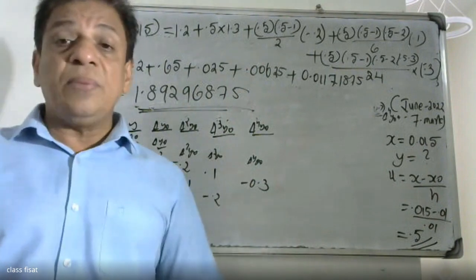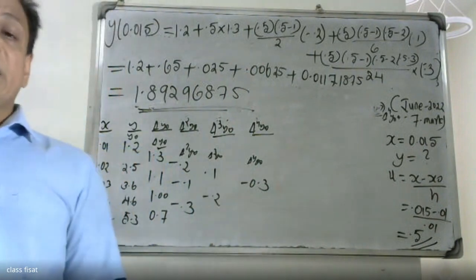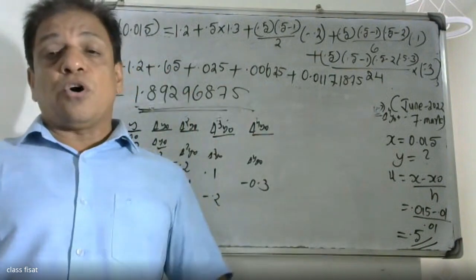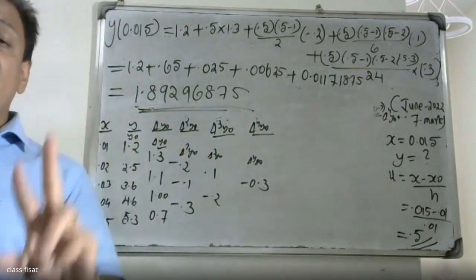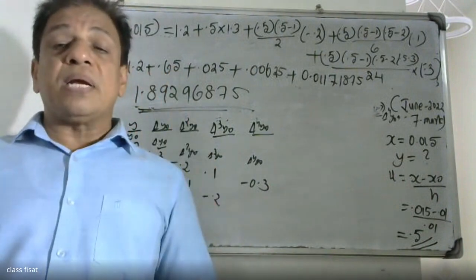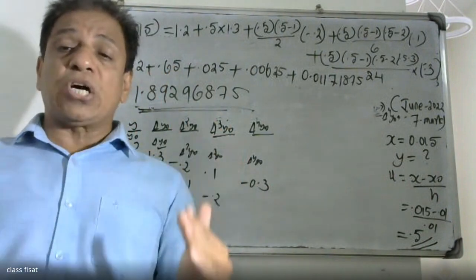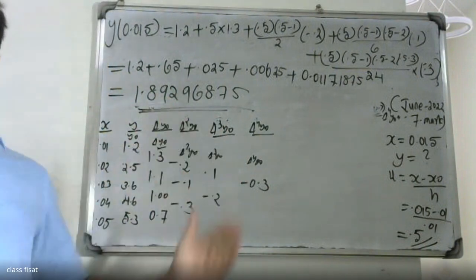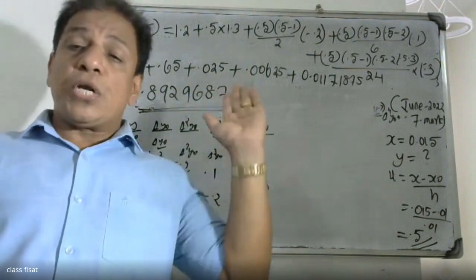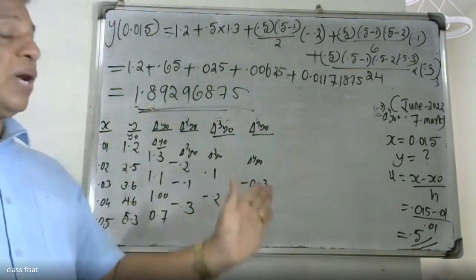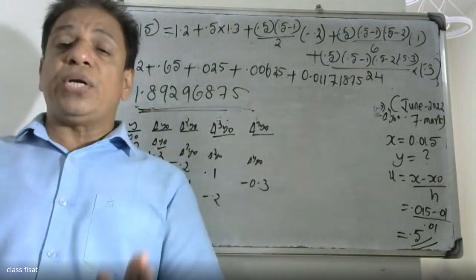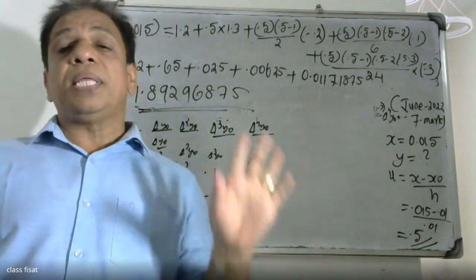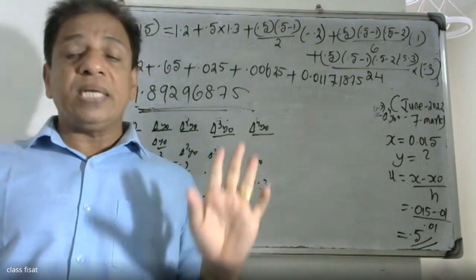This is an 8-mark question. The formula, the difference table with upper layer delta values, delta y, and delta raised to 4 are all used. The final answer is 1.892968. Thank you very much.